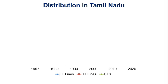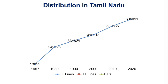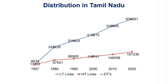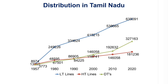Considering the distribution growth in Tamil Nadu from 1957 to 2020, there was a drastic increase. Low tension lines grew from 30,055 kilometers in 1957 to 6,35,091 kilometers in 2020. High tension lines grew from 13,853 kilometers to 1,81,236 kilometers. The number of distribution transformers increased from 3,773 in 1957 to 3,27,163 in 2020.